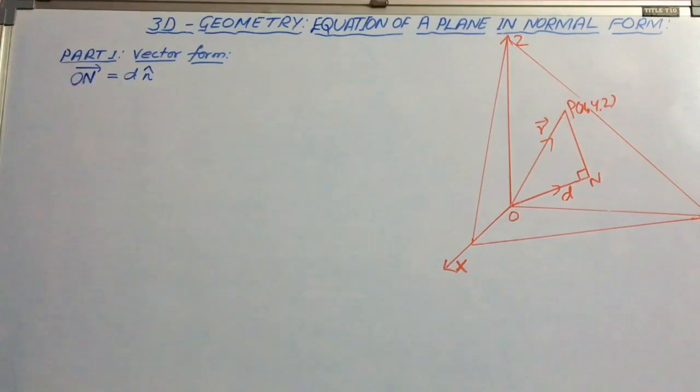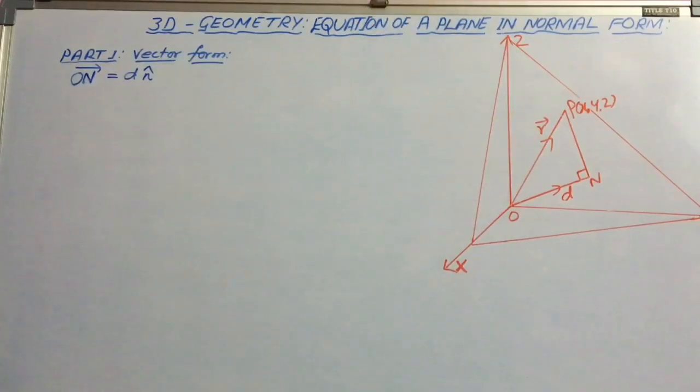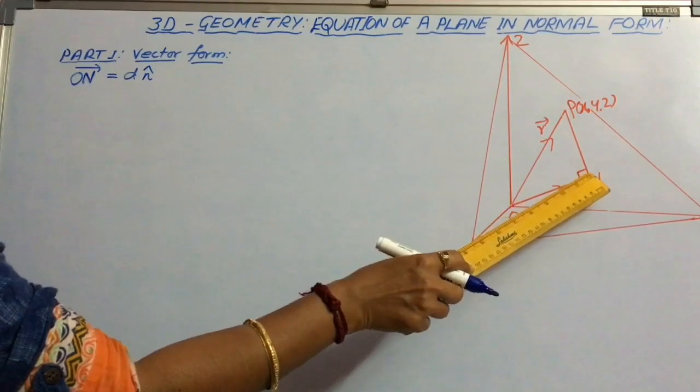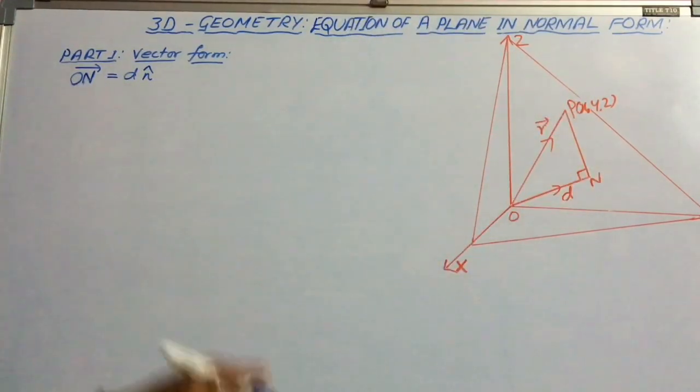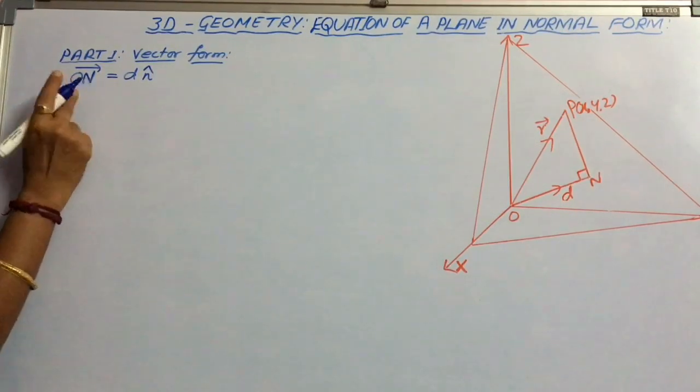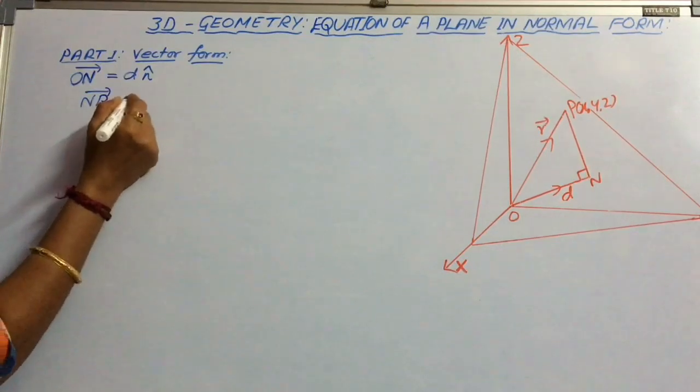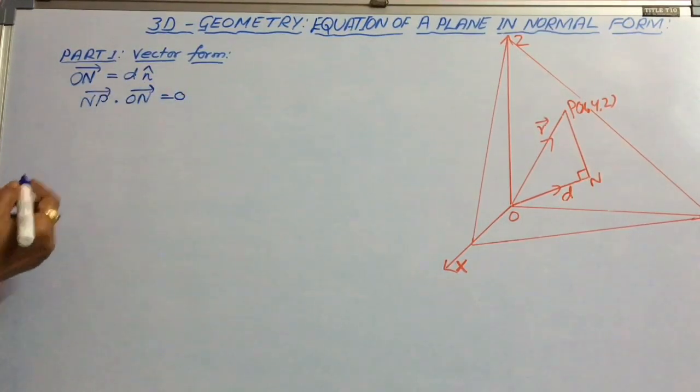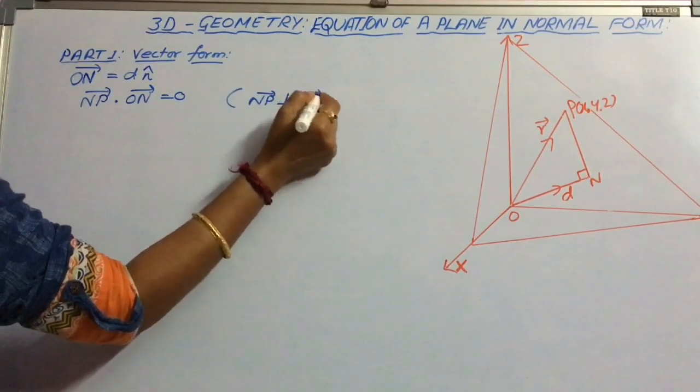Let us consider a point P of xyz on the same plane with position vector r. But from the diagram, we can say that NP is perpendicular to ON. That means NP dot ON equal to 0, as NP is perpendicular to ON.